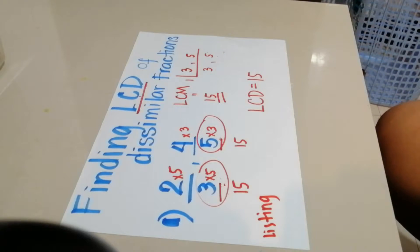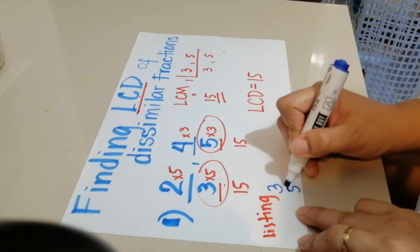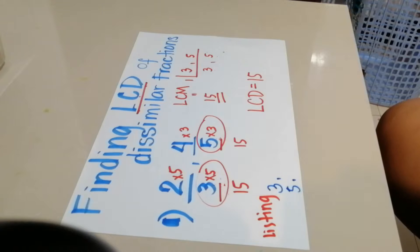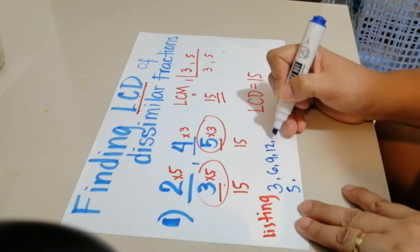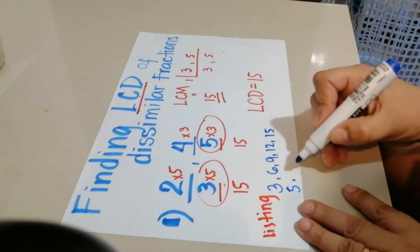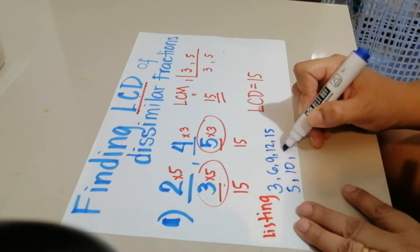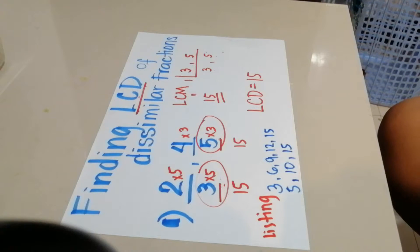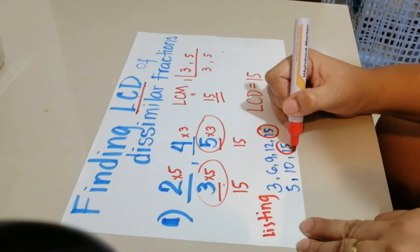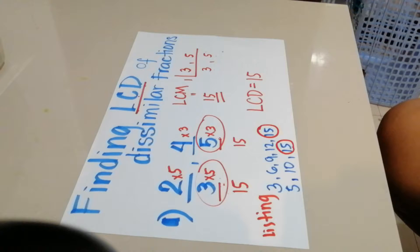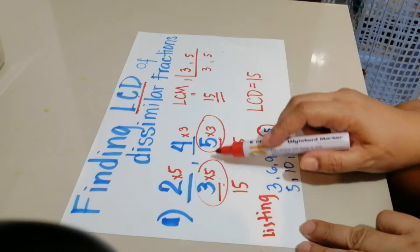So for 3, we list the multiples by skip counting: 3, 6, 9, 12, 15. For 5, we skip count by 5: 5, 10, 15. As you can see, the first number common to both 3 and 5 is 15. Both have a common multiple of 15. That is why we say the LCD of 3 and 5 is 15.